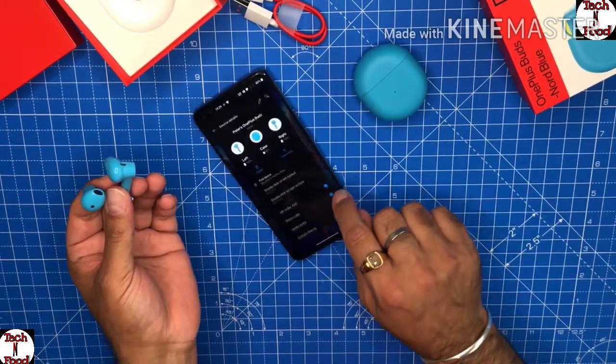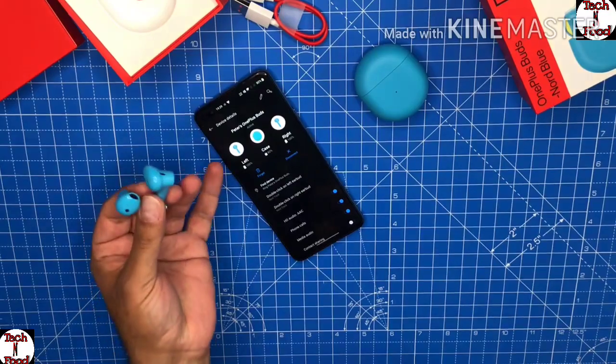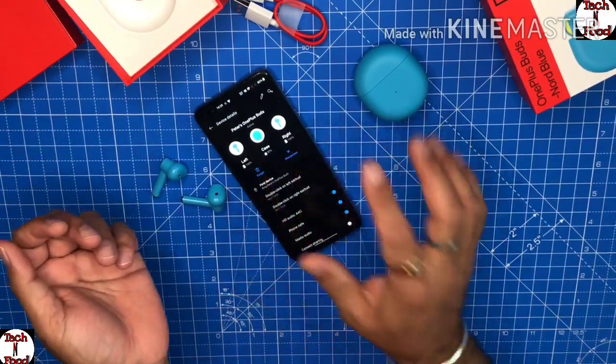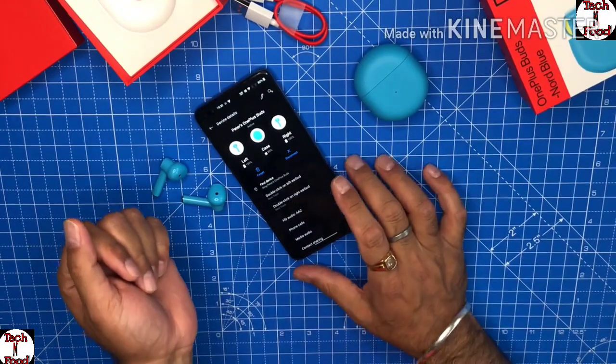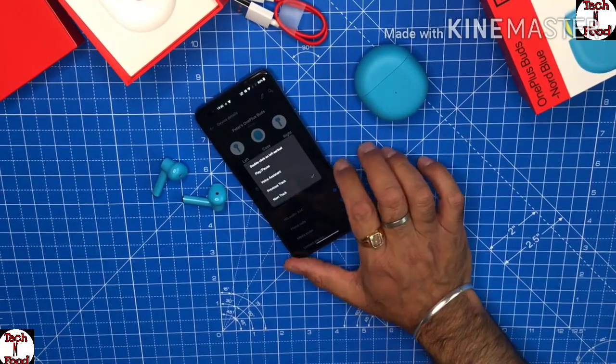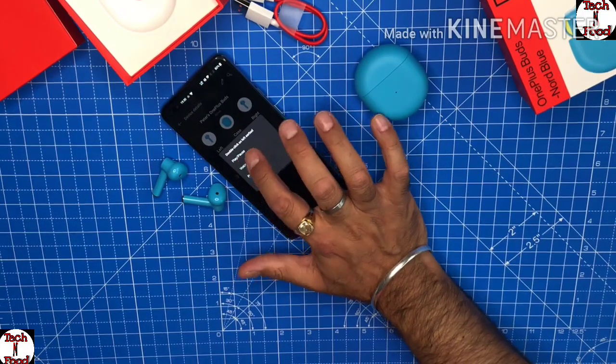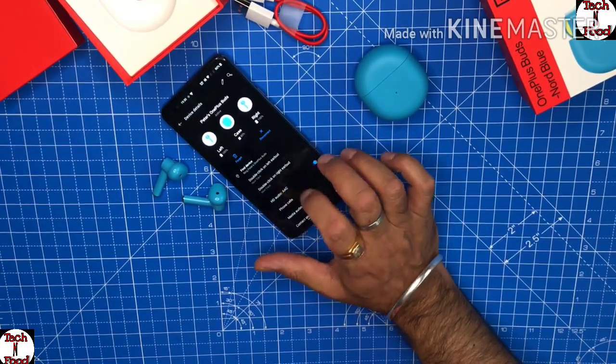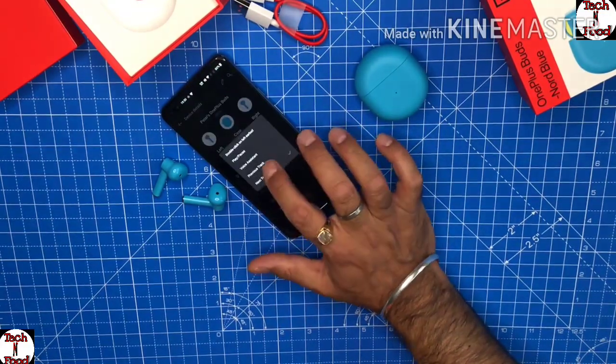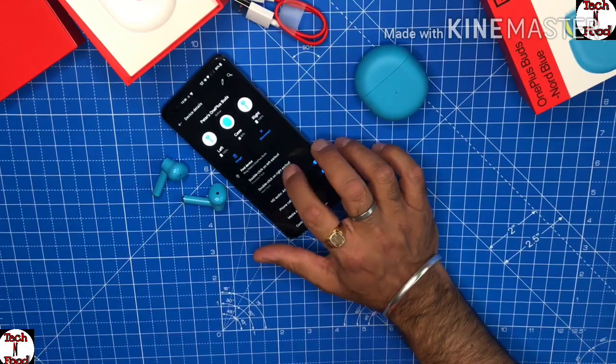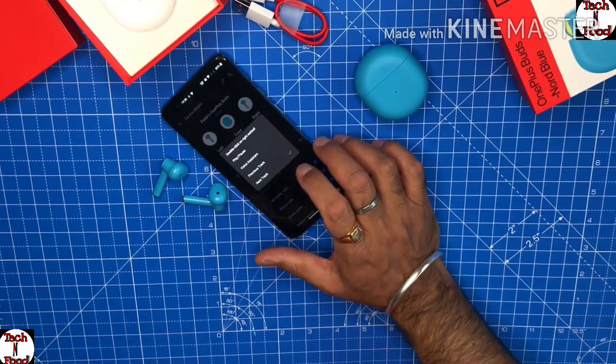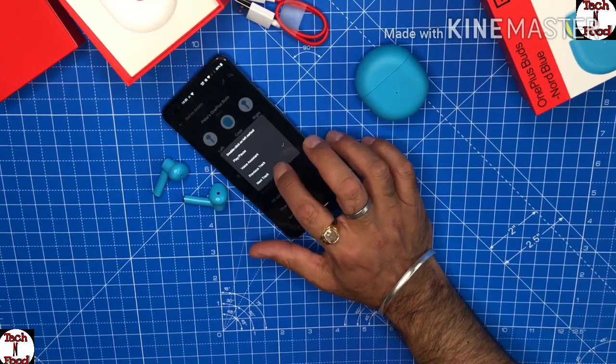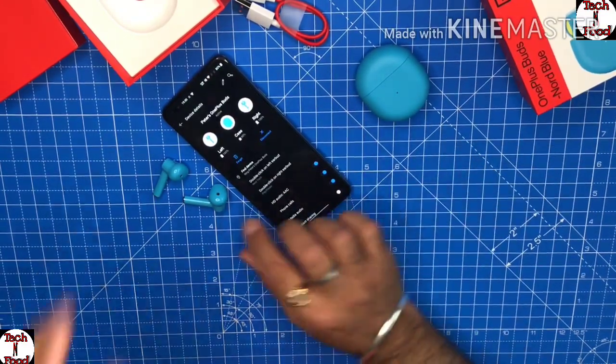Another thing I'm gonna do is I'm in the settings of the OnePlus Buds. It shows the left and right bud is 100%, the case has got 80%. You can change the settings as well. You can change the settings for double click on the left earbud to play and pause, voice assistant, previous track, or next track. Same goes to the right one. You can change it depending on what your preference is. I will definitely put the next track and play and pause if I have my way.